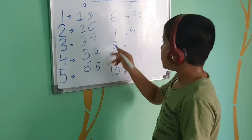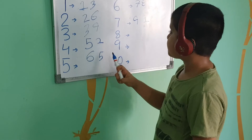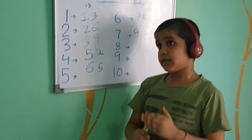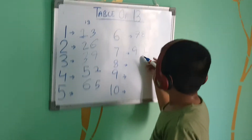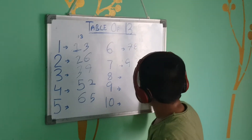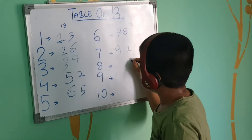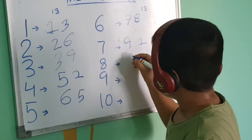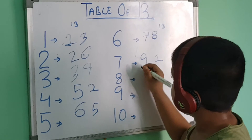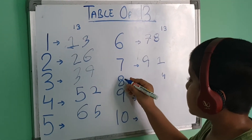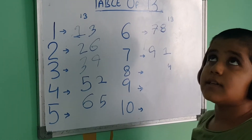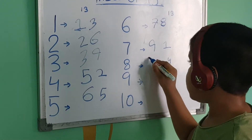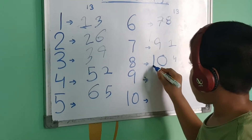Now we will do 3 eights. 3 eights is equal to 24. So we will write 4 here and take 1 carry. We will add 2 to 8, which becomes 10. So we will write here 10 — giving us 104.